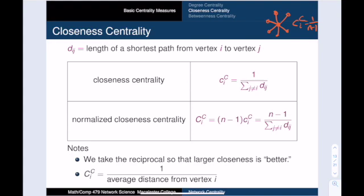By the way, we have another nice interpretation of normalized closeness centrality. The average distance from vertex i is just the sum of the d_ij divided by n-1. And so, the normalized degree centrality is the reciprocal of the average distance from vertex i.